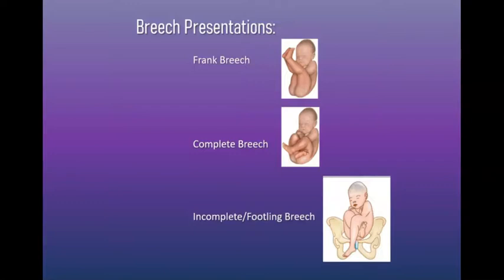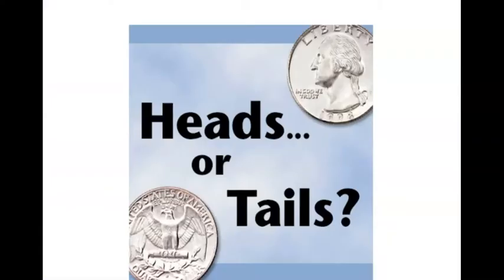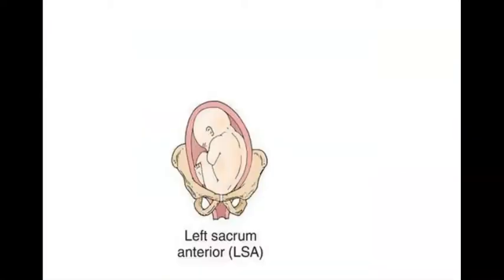Remember, with cephalic or vertex presentation we could further describe how the baby was lying in reference to where its occiput was. With a breech presentation, rather than describing where the head is, we're going to describe where the baby's backside or sacrum lies. It will follow exactly like the occiput but instead of the head we're looking at the tail. For example, left sacrum anterior means that the baby's sacrum is pointed maternal left and maternal anterior.